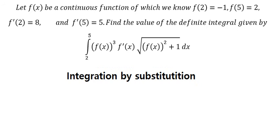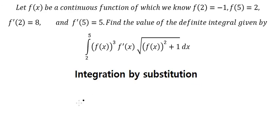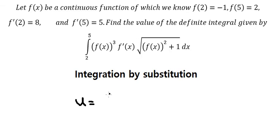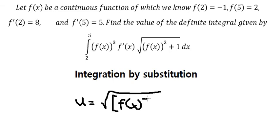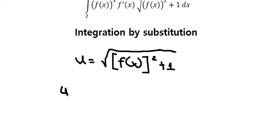We let u equal to the square root of (f(x))² + 1. Next, we square both sides to cancel the square root.